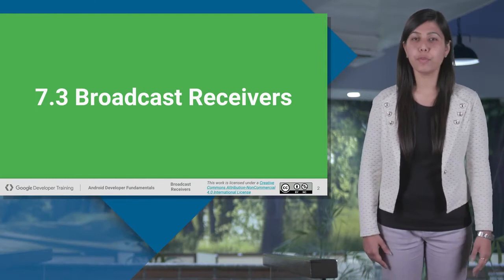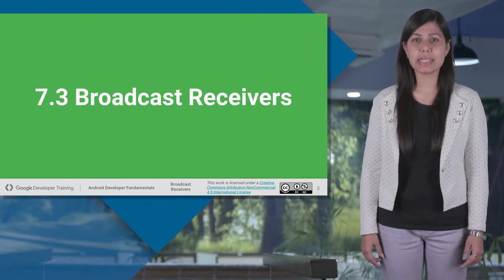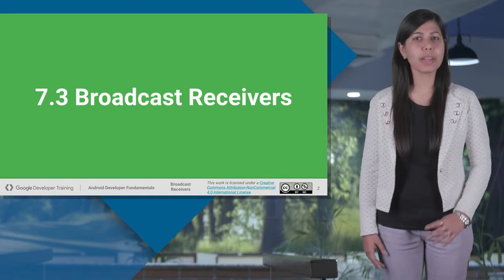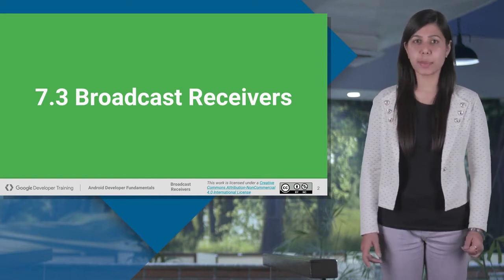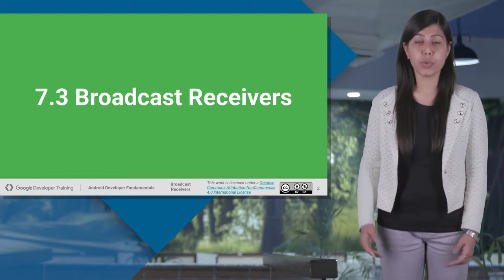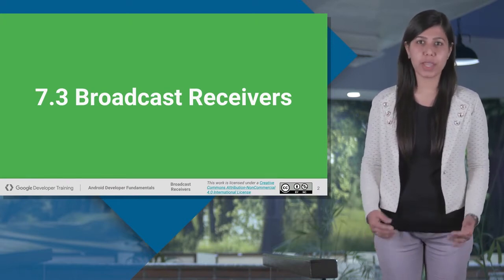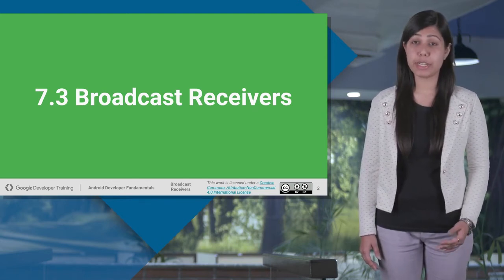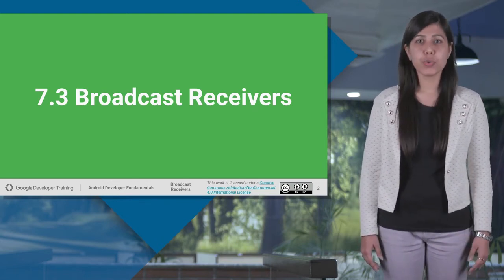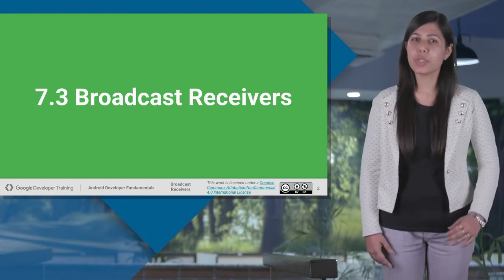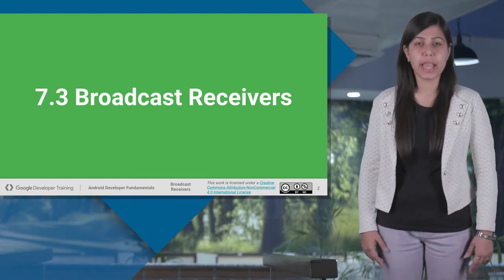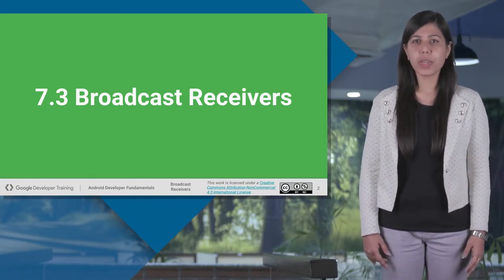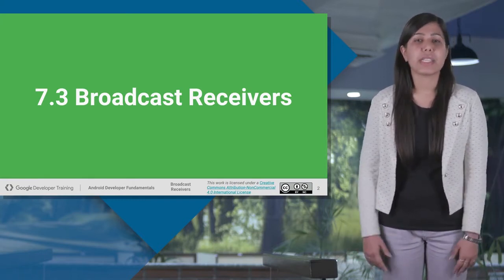Some Android applications won't do anything until a certain type of message is broadcast by the Android operating system or any other applications. Suppose you want your app to react in some way when a system event occurs. You may for example have built a music app and you wanted to launch the app to start playing music if headphones are connected and stop playing music if the headphones are removed. How can your app tell when these events occur?